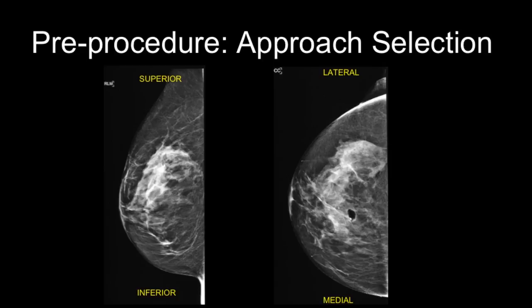Now that we have determined what is being localized, it is time to determine the localization approach. In this case, we are localizing a bar clip within the slightly upper inner right breast. We measure the distance from the target to the closest skin surface on each view. On the lateral view, the target is closest to the superior skin surface at 4 centimeters; on the CC view, closest to the medial skin surface at 6 centimeters. The best approach is the shortest approach, requiring the shortest localization needle — in this case, localization from above is most practical.